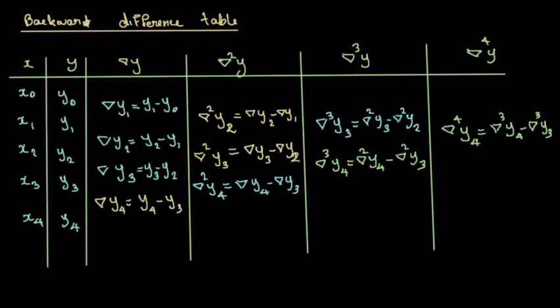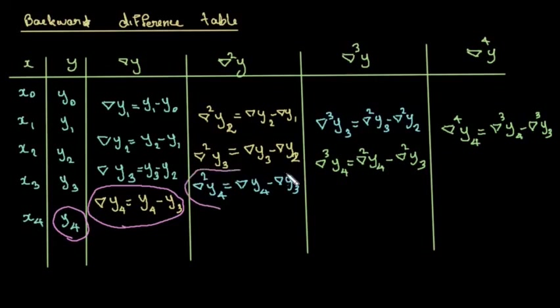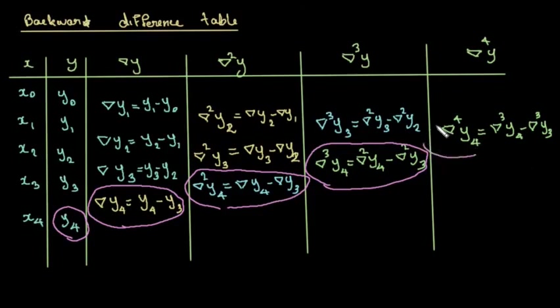Newton's backward difference interpolation formula uses the last-column terms: y4, Δy4, Δ²y4, Δ³y4, and Δ⁴y4. We substitute these values into the formula.